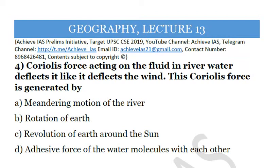Fourth question: Coriolis force acting on fluid in river water deflects it like it deflects the wind. This Coriolis force is generated by A) meandering motion of the river, B) rotation of Earth, C) revolution of Earth around the sun, or D) adhesive force of water molecules with each other. This is a straightforward question — the answer is rotation of Earth. The rotation of Earth generates Coriolis force, which is highest in polar areas and lowest at the equator. It causes river water and wind to deflect, and the greater the speed of the wind, the greater the deflection. At the equator, Coriolis force is zero.